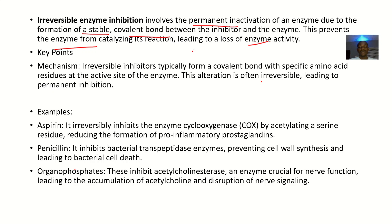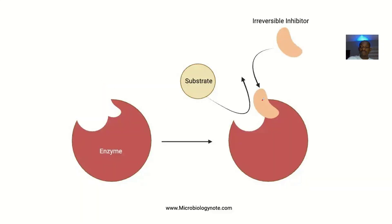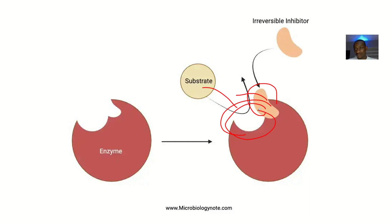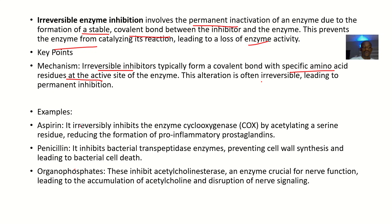For the mechanism: irreversible inhibitors typically form a covalent bond with a specific amino acid residue at the active site of the enzyme, blocking the active site. They may block it entirely or partially, but the substrate can no longer fit into the active site of the enzyme.